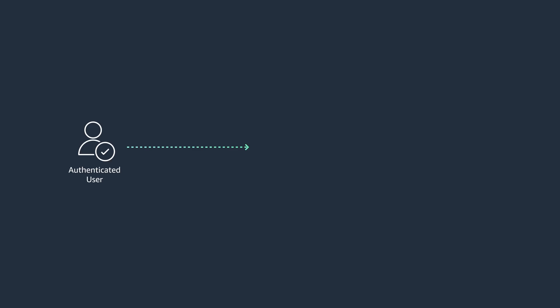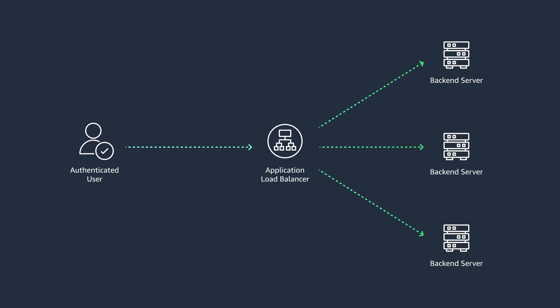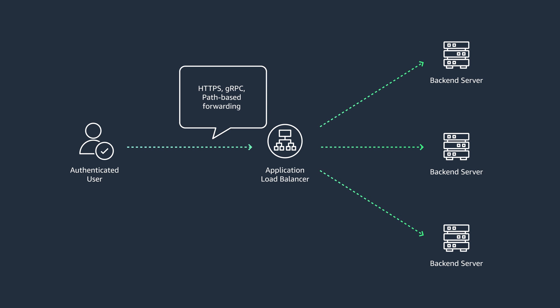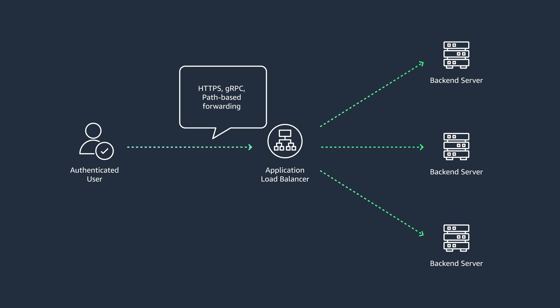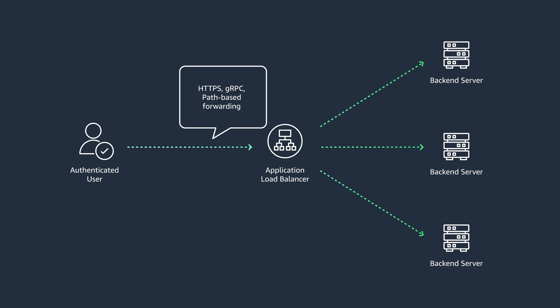Depending on your application requirements, you can either use an Application Load Balancer or a Network Load Balancer to expose your applications. If your application has requirements for L7 features such as path-based forwarding based on HTTP requests, or your application uses L7 protocols such as gRPC, you would typically use an ALB. If you have requirements for advanced API management such as throttling, you would use API Gateway.